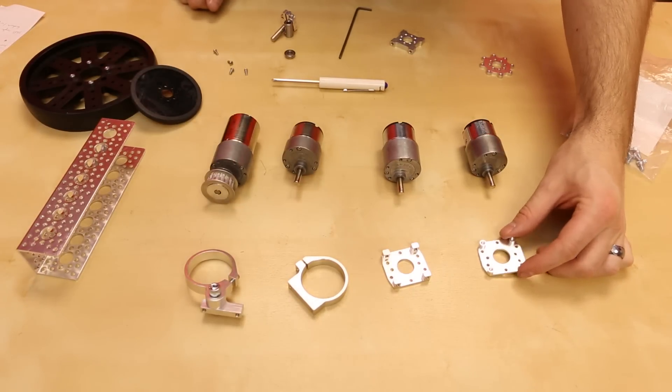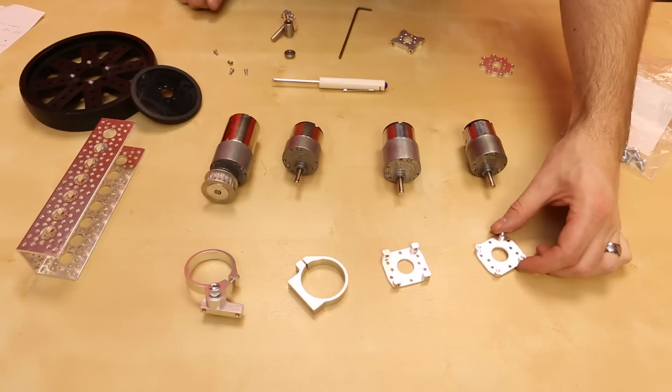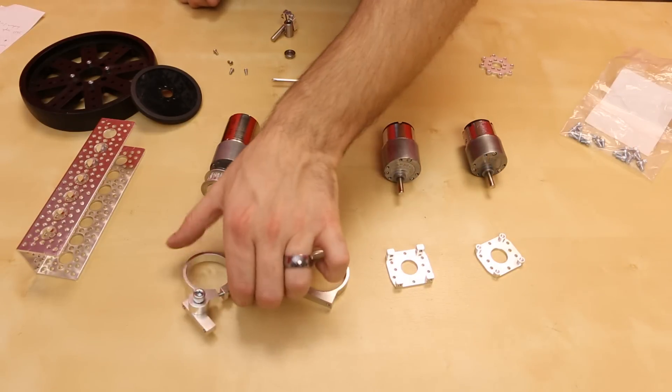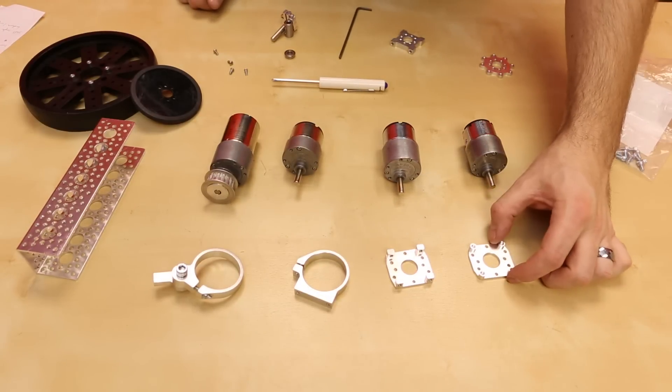First up, we've got the motor mount A, which looks a little something like that. We've got the motor mount D, we've got the clamp mount, and we've got the clamping swivel mount. Let's start with the A.